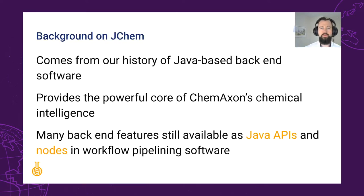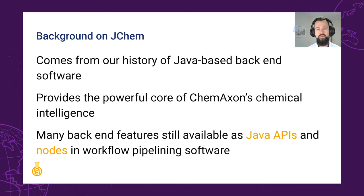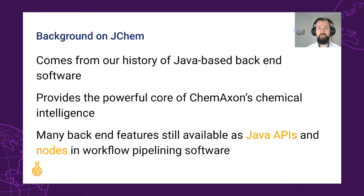To kick things off I'd like to briefly mention the origins of the JChem name, as this is something of a mystery to some newcomers. Veteran users of ChemAxon software probably already know that it stems from our origin as a provider of back-end toolkits which are written primarily in Java, hence the name JChem. As ChemAxon has evolved from a provider of toolkits to end-user applications with fully fledged interfaces, and more recently to cloud-hosted solutions and services, many key components of JChem continue to power the chemical intelligence that pervades our software.